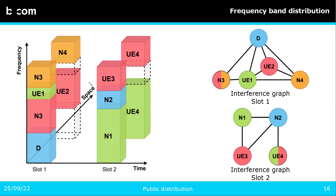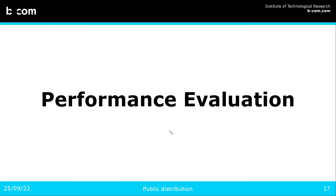On the left you have an example of how the frequency band is divided into subbands and attributed to the different equipments. For slot one, node M3 has access to the same resources as node 4 and UE2. And since the two slots are independent, the same colors do not need to represent the same resources.